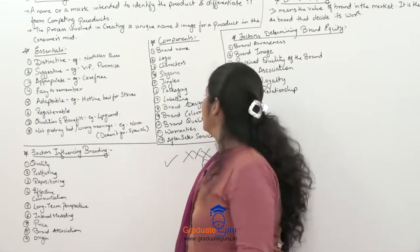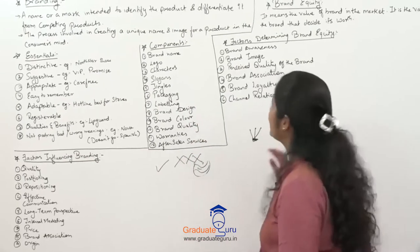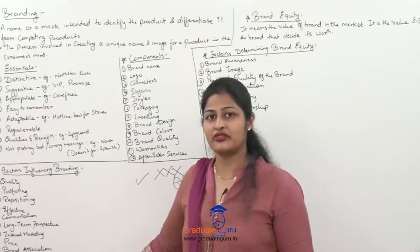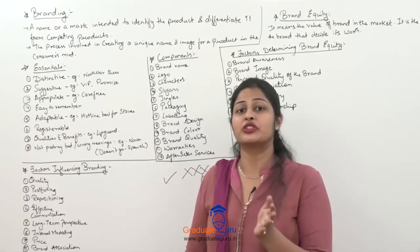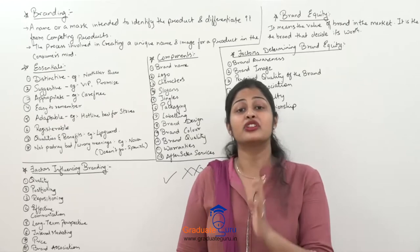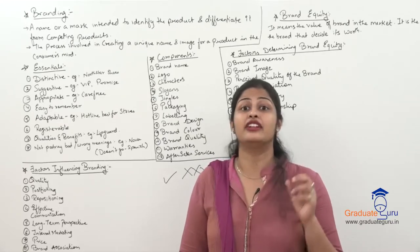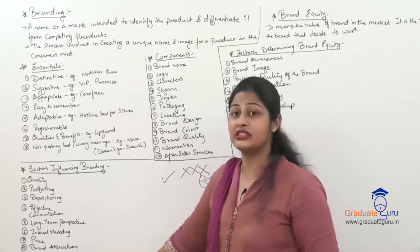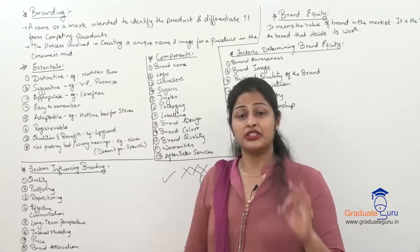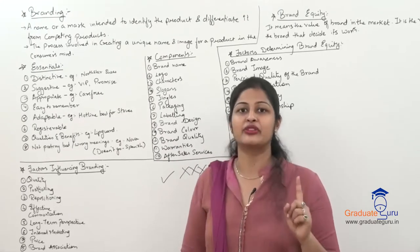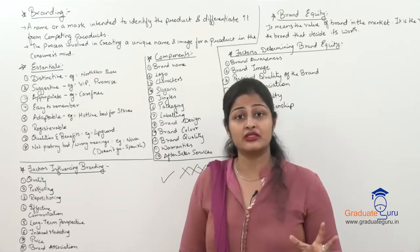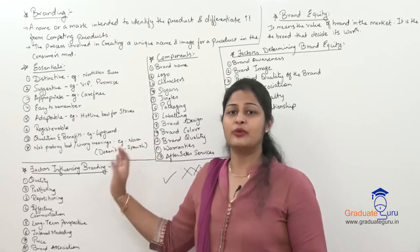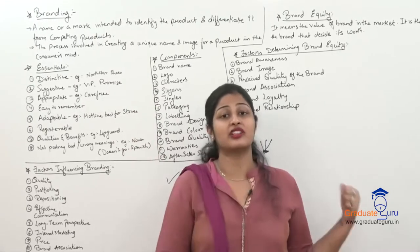So origin is also one of the factors which influences branding. Now we go to brand equity. Before that, I request you to write down the pointers on branding, because brand equity is a continuation topic but a separate question can be asked only on brand equity. I'll teach brand equity in just five minutes — first take down the branding pointers. One question from this topic is definitely coming, either five marks or seven marks.